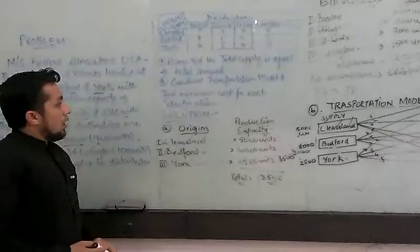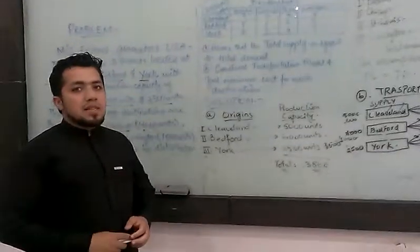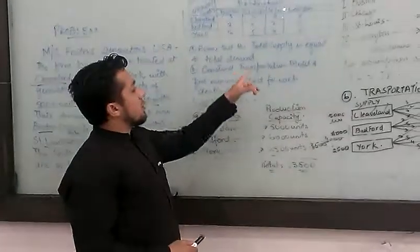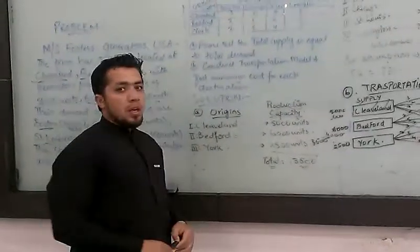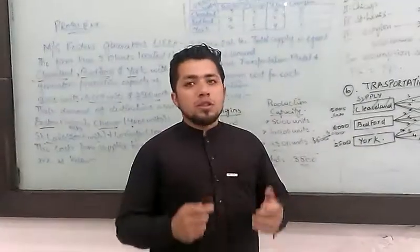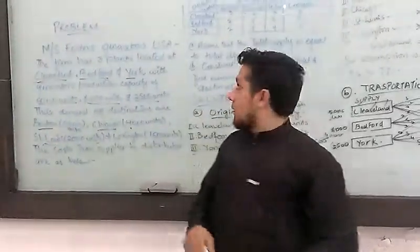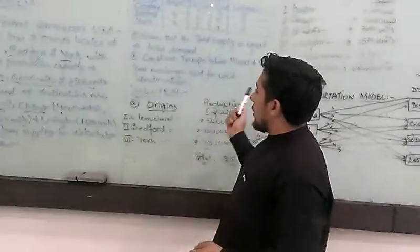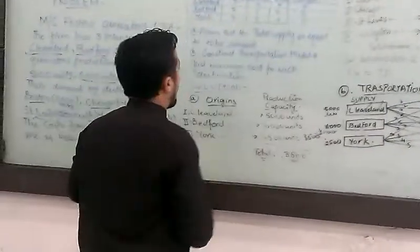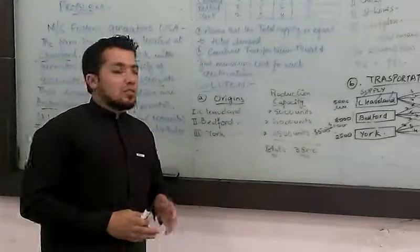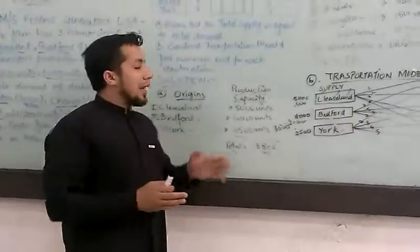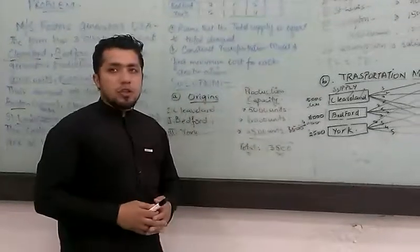Now in here we have some assumptions. Assumption is: assume that the total supply is equal to total demand. And second one, construct the transportation model and find minimum cost for each destination. We are constructing the transportation model and also finding out the minimum cost for each.